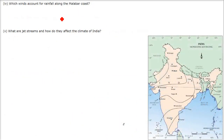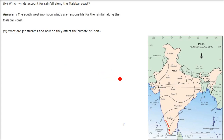Which winds account for rainfall along the Malabar coast? This is our Malabar coast — the Kerala region, the sea coastal region of Kerala. The southern or southwest monsoon winds are responsible for the rainfall along the Malabar coast.